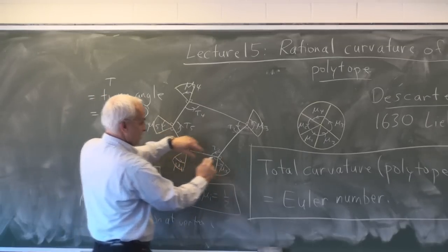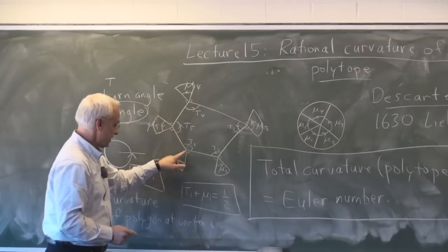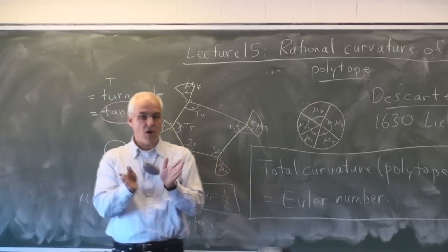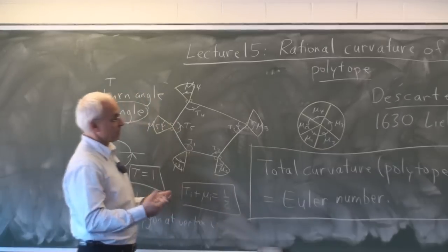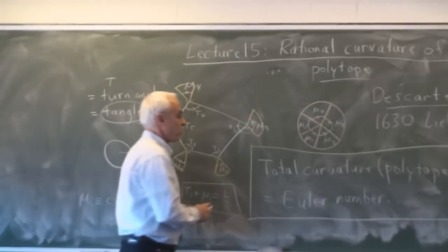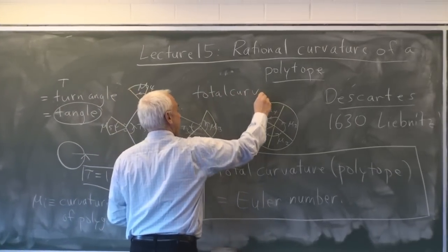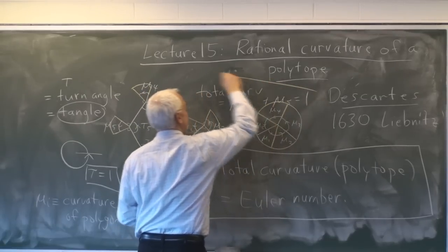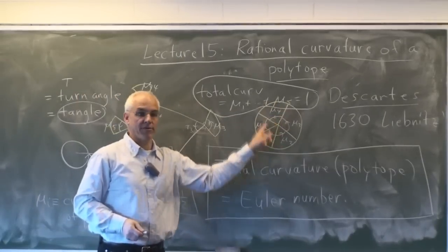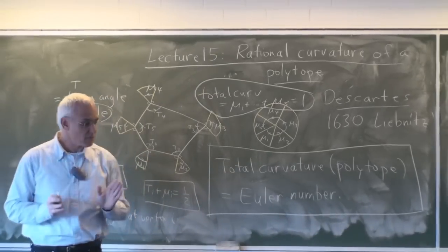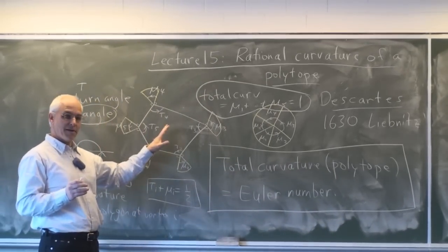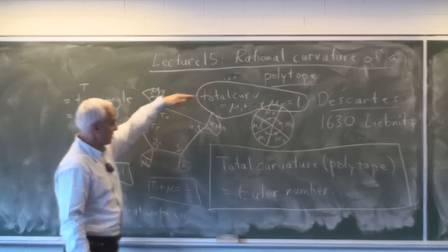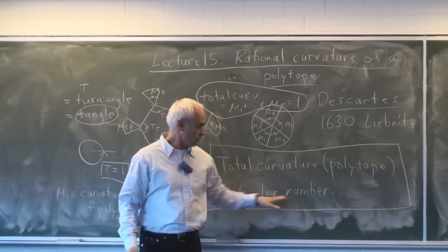When we put these various exterior tangles together and arrange them in a circle, the total turn angle is one. These exterior cones all fit together to give us a circle, so the total curvature — the sum of the mu's — equals one. That's what we want to generalize: extend this idea to a polytope instead of a polygon. Hopefully, instead of finding total curvature equals one, we'll find it equals the Euler number.